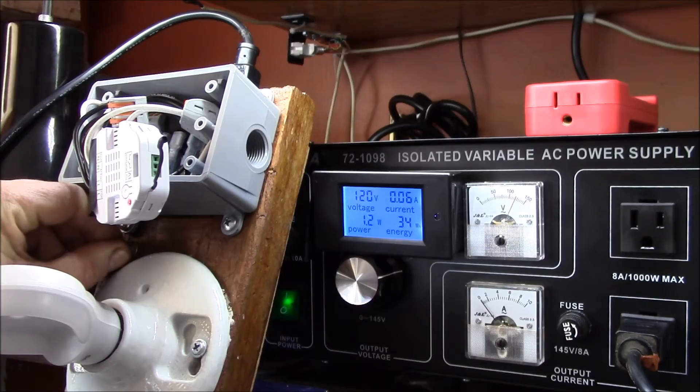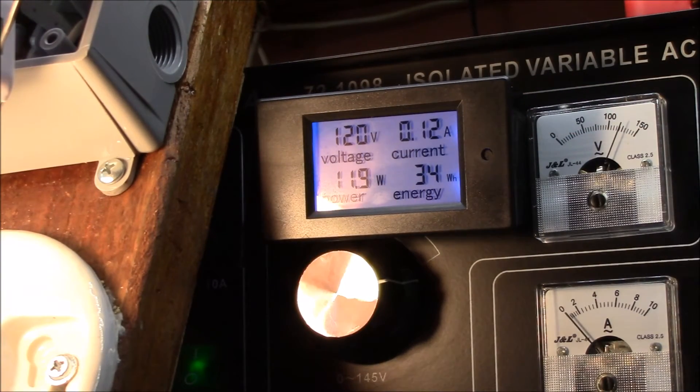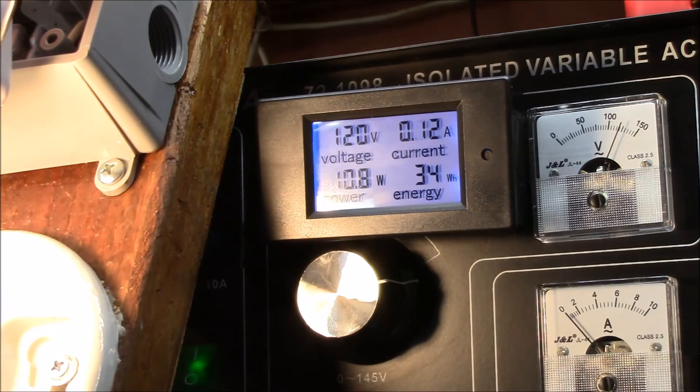And then you can see when I turn the light bulb on—so you can see here's the light bulb running through the dimmer at a hundred percent, so it's full brightness: eleven point nine watts. Now this should be about the same.